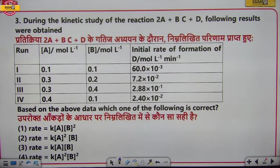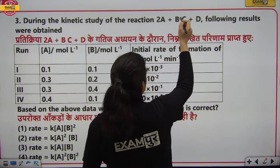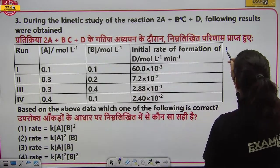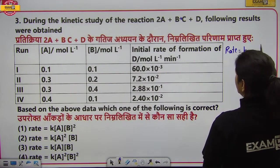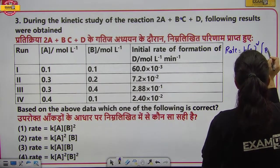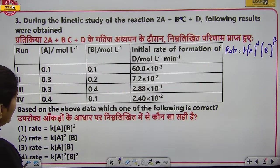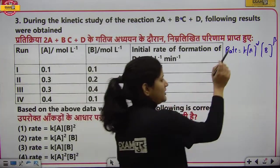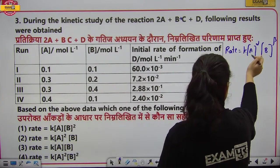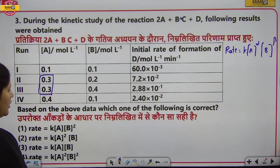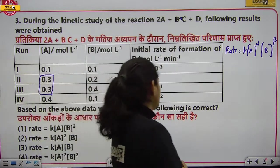अगले सवाल में data दिया है और initial rate दिया है। Reaction: 2A + B → C + D। Rate law expression: rate = K[A]^α[B]^β। अलग-अलग concentration पर rate of formation of D दिया है। एक ऐसा pair select करते हैं जहाँ [A] = 0.3 same हो — second और third experiment।